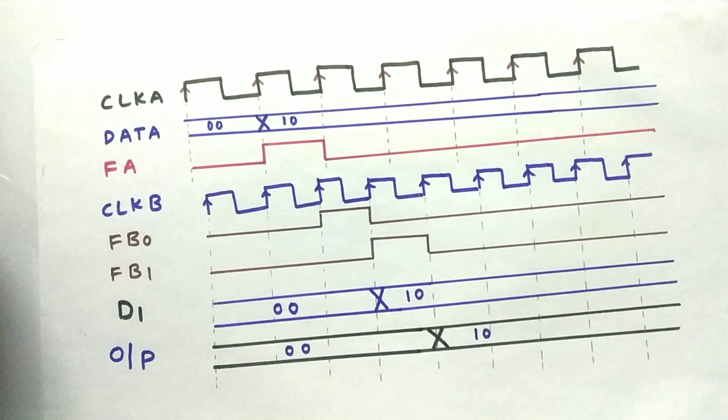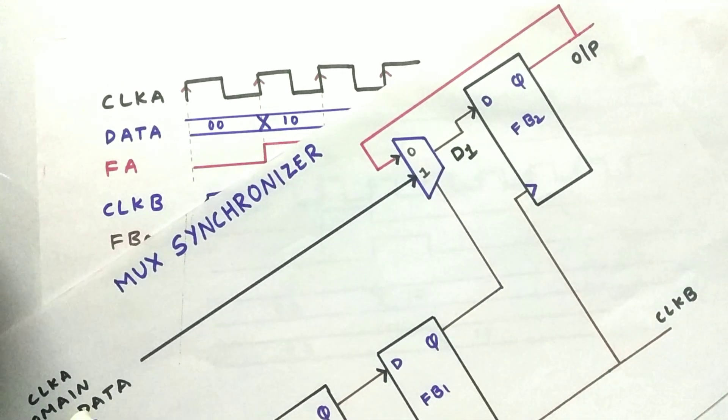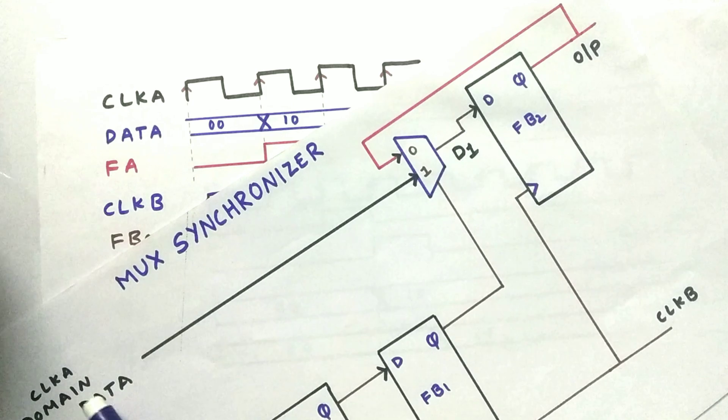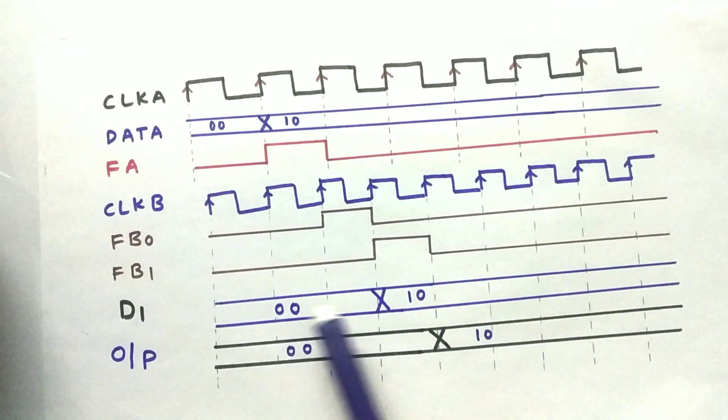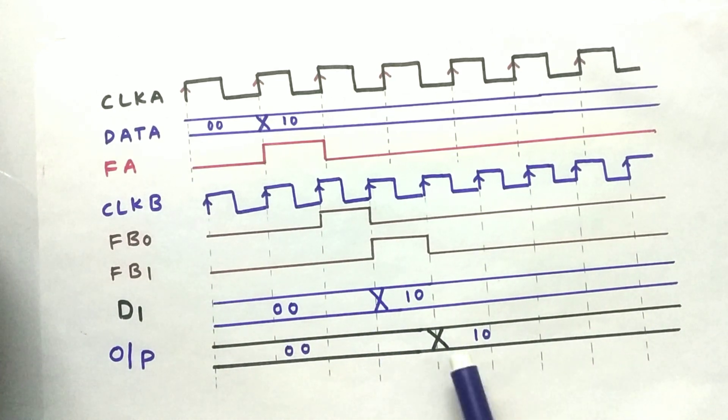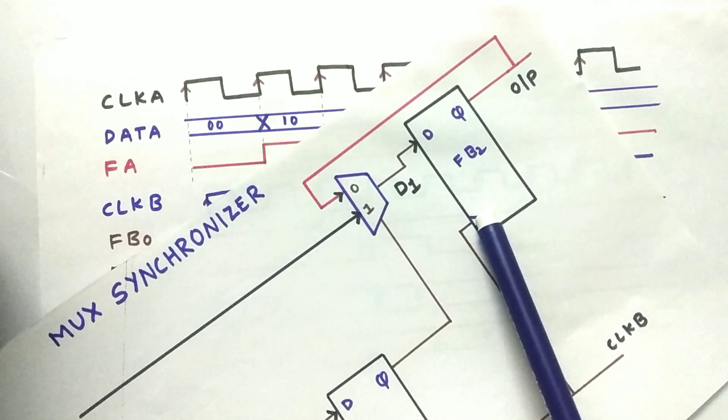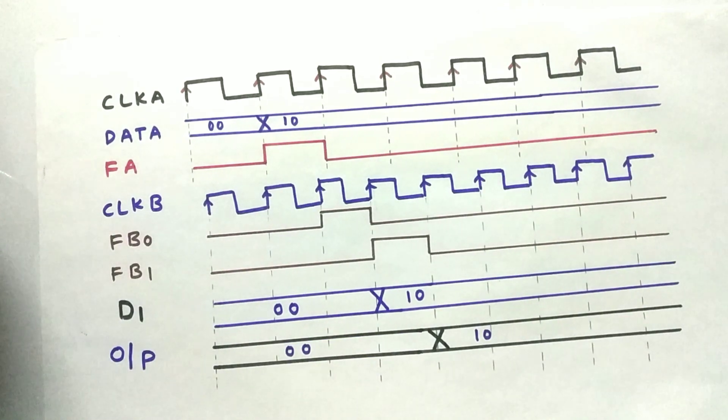The output of the flip-flop B1 will select the 1 as output so that we can get our data from clock A domain to clock B domain. D1 will become 10 whenever FB1 will become high. And this D1 is passed to output that is we need to register our data. So we are sending it to a flip-flop. This is the basics about the multiplexer synchronizer.